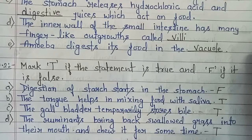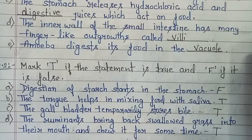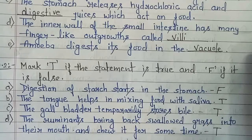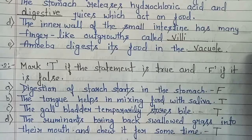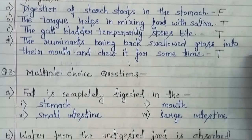Part C: the gallbladder temporarily stores bile — that is True. Bile is secreted by the liver and temporarily stored in the gallbladder. Part D: ruminants bring back swallowed grass into their mouth and chew it for some time — that is True. That is why they are called ruminants; the food is stored and then brought back up to be chewed again.